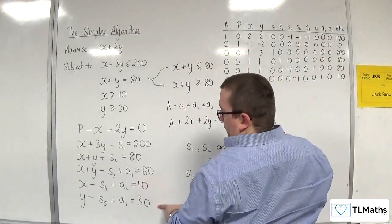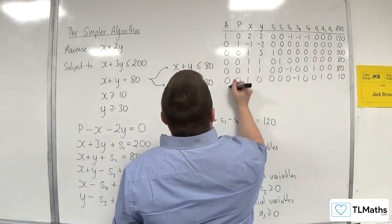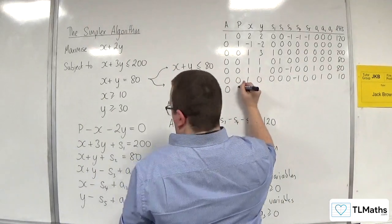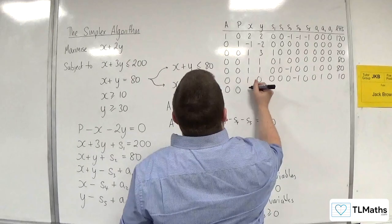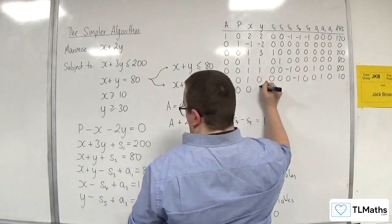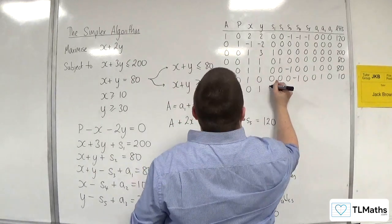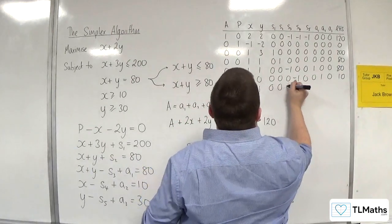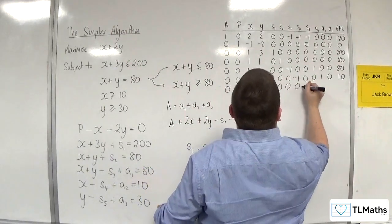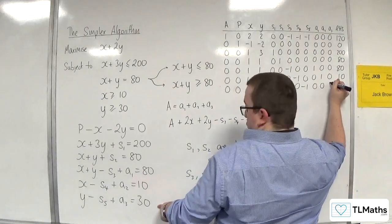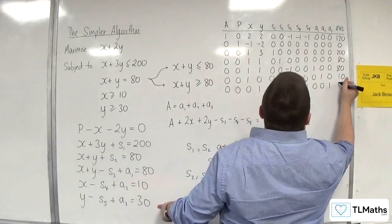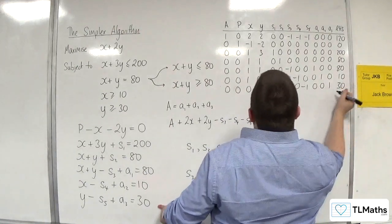And the last row for y greater than or equal to 30: 0, 0, 0, 1, 0, 0, 0, 0, 0, minus 1, 0, 1. Right-hand side is 30.